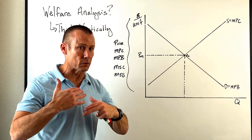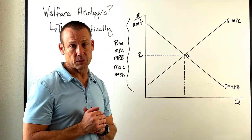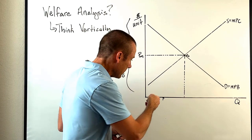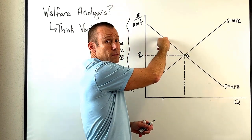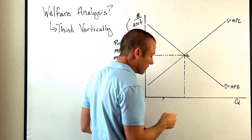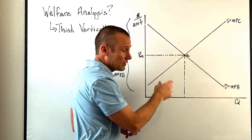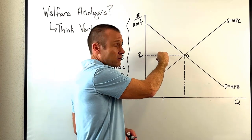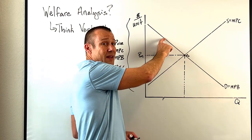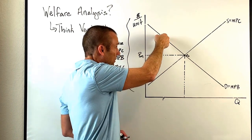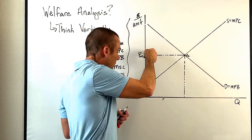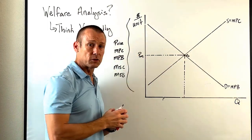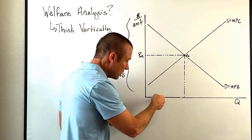Let's actually do consumer surplus and producer surplus. For any unit of output, that vertical distance on the MPB curve is the marginal private benefit to the consumer. The price they have to pay is their cost, and the difference between the benefit and the cost is the surplus. So all of those verticals right over each unit of output form the consumer surplus triangle. Think vertically — that's the consumer surplus.